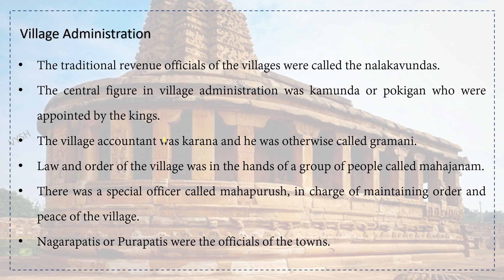Regarding village administration: the traditional revenue officials of the village were called Nalakavundas. The central figure in village administration was Kamunda or Pokigan, who were appointed by the kings. The village accountant was Karana, otherwise called Gramani. Law and order of the village was in the hands of a group called Mahajanam. There was a special officer called Mahapurush in charge of maintaining order and peace. Nagarapatis or Purapatis were the officials of the town, similar to what we call Nagarpalika and Puranagar today.